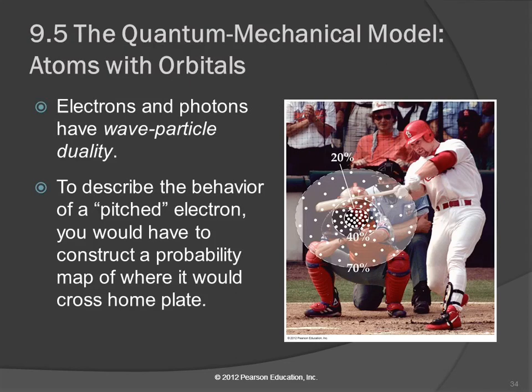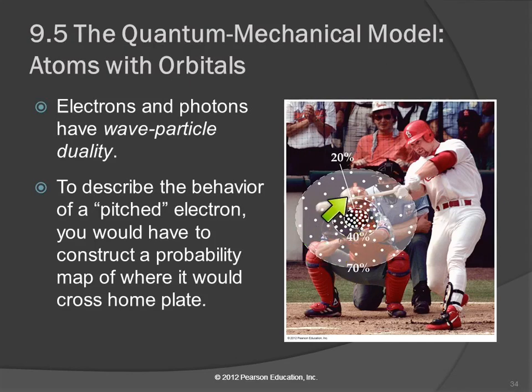Electrons and photons have wave-particle duality. We saw how light acts as a wave and a particle — electrons also act like particles and like waves. If you threw the electron in exactly the same way every time, you would get a distribution of places the electron hit when it reached the catcher: perhaps 20% of the time in the center circle, 40% within a larger circle, 70% within an even larger circle — but 30% of the time outside that circle. It might be anywhere. That doesn't happen with baseballs.